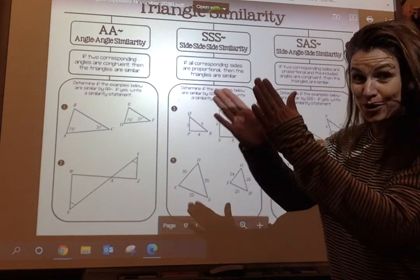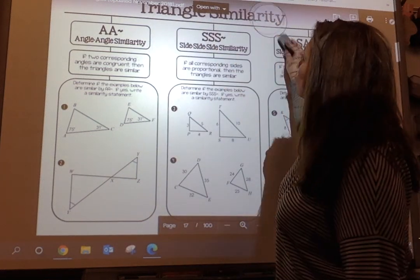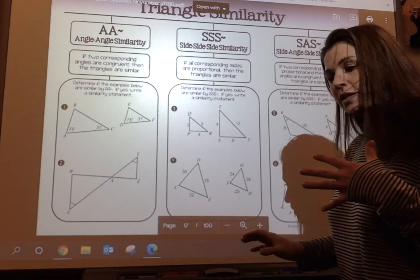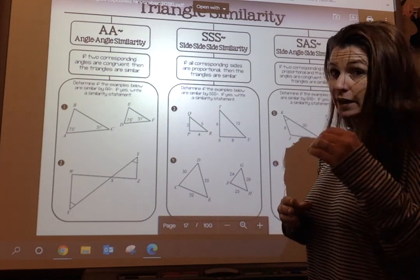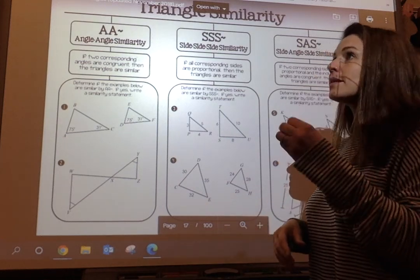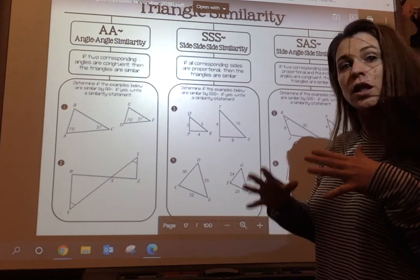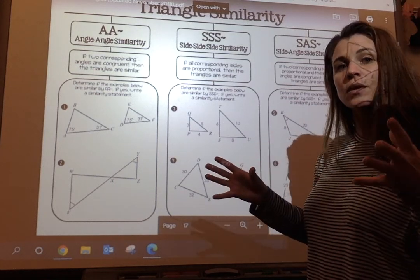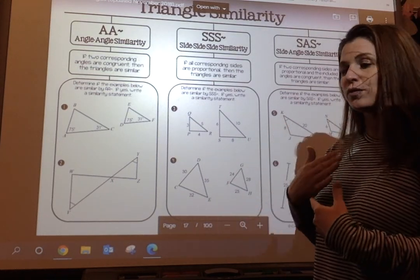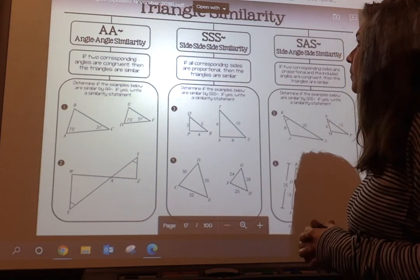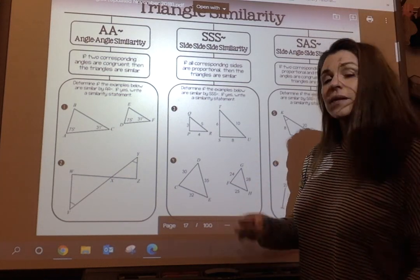We are getting ready to start proofs again with similar triangles. So remember when we did congruent triangles, we had angle-side-angle, side-side-side, side-angle-side, HL, and all those theorems and statements that allowed us to prove triangles were congruent. Well, similarity is a little easier because there's only three.